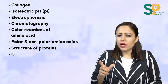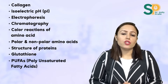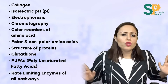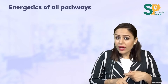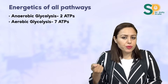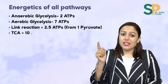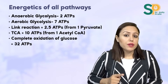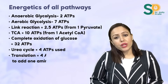Read about the tripeptide glutathione and which three amino acids are involved. Also do PUFAs — polyunsaturated fatty acids like linoleic acid and linolenic acid. Learn the rate-limiting enzymes and energetics of all biochemical pathways. Quick revision: anaerobic glycolysis — 2 ATPs; aerobic glycolysis — 7 ATPs; link reaction (per pyruvate) — 2.5 ATPs; TCA cycle (per acetyl-CoA) — 10 ATPs; complete oxidation of glucose — 32 ATPs; urea cycle (per urea) — 4 ATPs used.